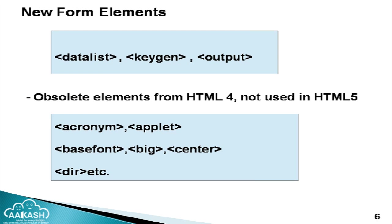Another element is based on forms. New tags introduced in form elements include datalist, keygen, and output. Some tags have been removed from HTML4 and should not be used in HTML5, such as applet, basefont, big, center, dir, and others — there are lots of tags removed from HTML5.